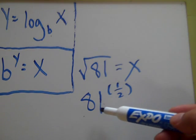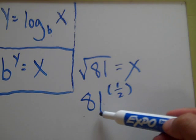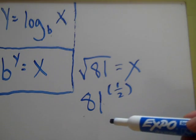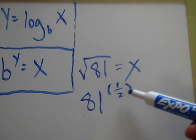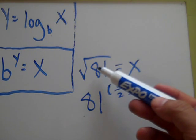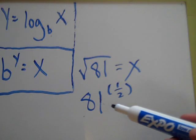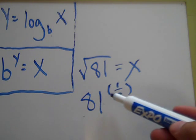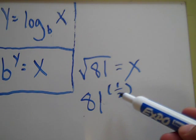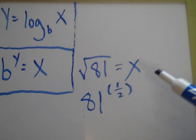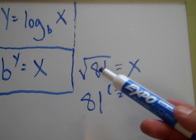If you set any number, any square number like 81, to an exponent of one half, it will give you what the square root is of 81. So it doesn't matter if it's 81. If you put 81 to the one half power, it's going to give you 9, which is the square root of 81.